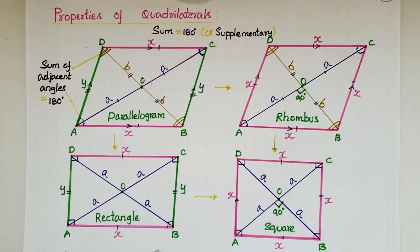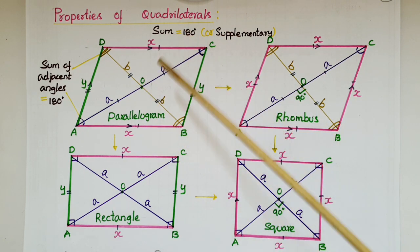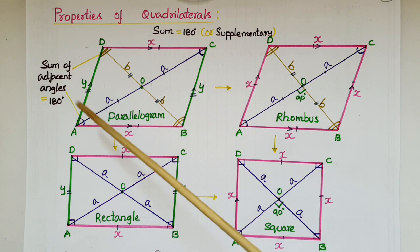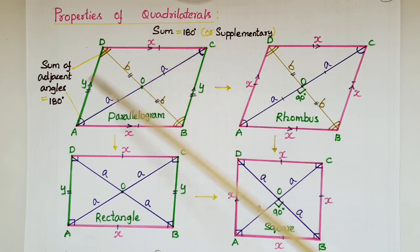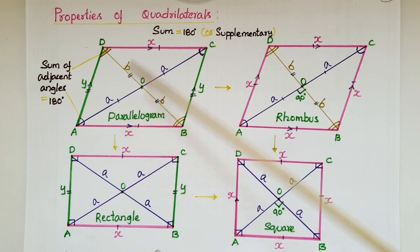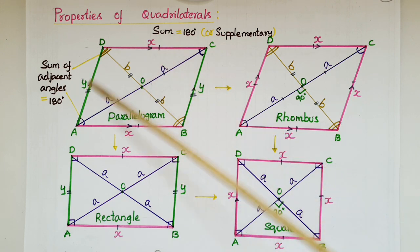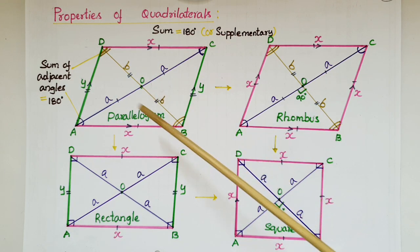Hello everyone, today I am going to tell an easy way to remember properties of some quadrilaterals. The first one is a parallelogram. In a parallelogram, opposite sides are parallel and equal, so here AB is parallel to DC and AD is parallel to BC, and AB is equal to DC and AD is equal to BC.